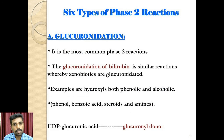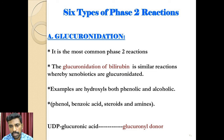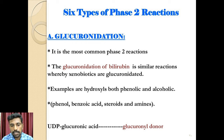There are 6 different types of Phase 2 reactions involved in the body: 1st, glucuronidation; 2nd, sulphation; 3rd, conjugation with glutathione; 4th, acetylation; 5th, methylation; and 6th, conjugation with amino acids.